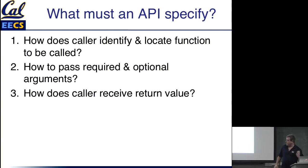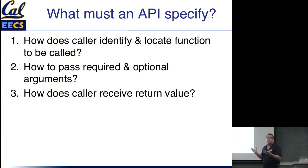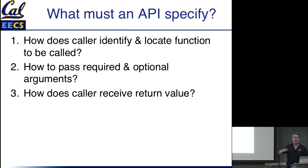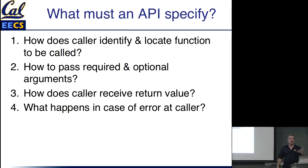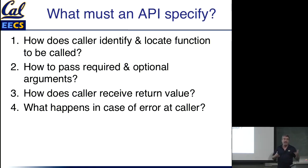And there's at least one more thing: what happens in case of an error? What happens if you didn't include all the required arguments, or something goes wrong while the callee is trying to service your request? How do errors get handled, how do they get reported, and which errors are possible on a particular operation — so you know which ones you might have to handle as the caller?